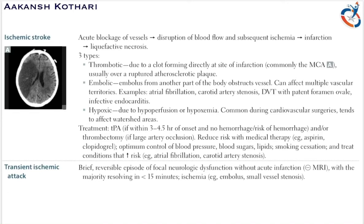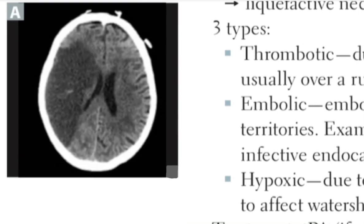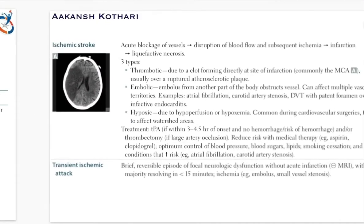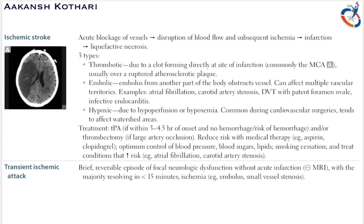There are three major types of ischemic stroke: thrombotic, embolic, and hypoxic. In thrombotic stroke, a clot forms directly at the site of infarction, commonly in the middle cerebral artery. On CT scan, when the middle cerebral artery is blocked, the infarcted area of the brain is visible. This typically occurs over a ruptured atherosclerotic plaque.